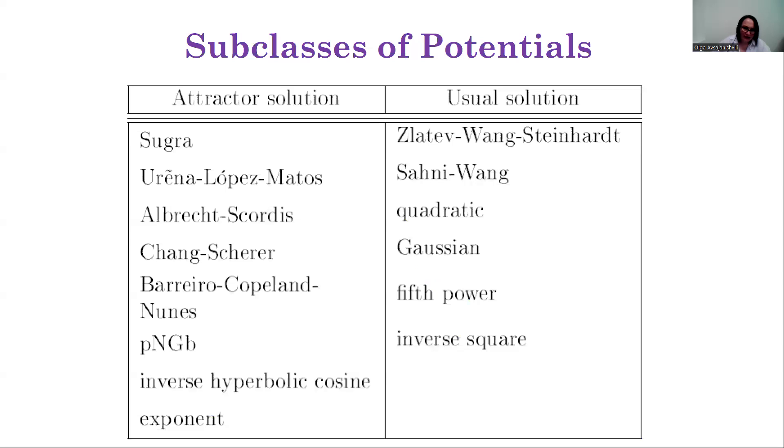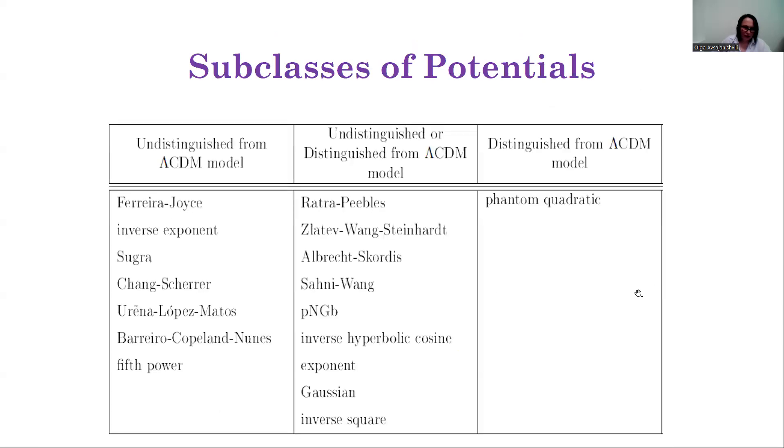Based on the results obtained, φCDM models can be divided into models which have attractor solutions and usual solutions, and into models which are undistinguished and can be either distinguished or undistinguished from the ΛCDM model at the present epoch.